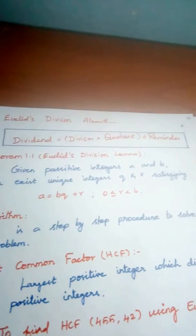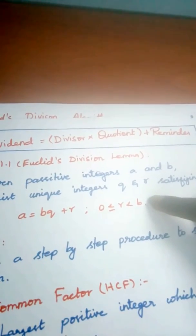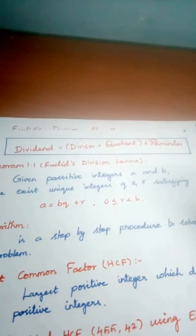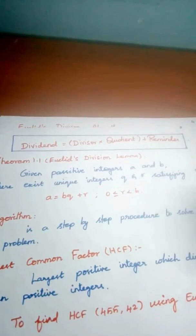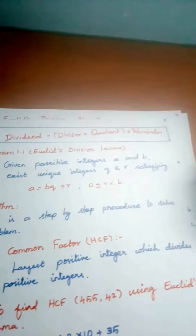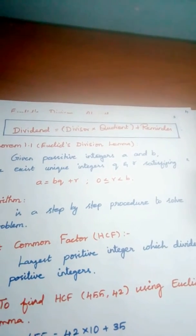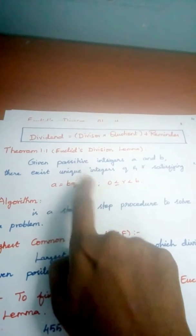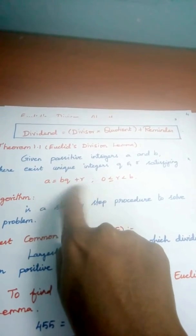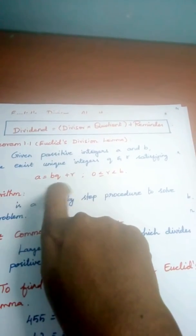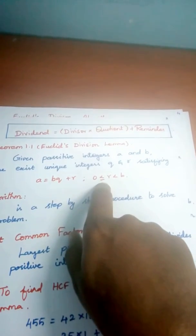This can be written as: a = bq + r, where r is between 0 and b — that is, 0 ≤ r < b. This is the theorem. For any given positive integers a and b, there exist unique integers q and r satisfying this formula: a = bq + r, where 0 ≤ r < b.